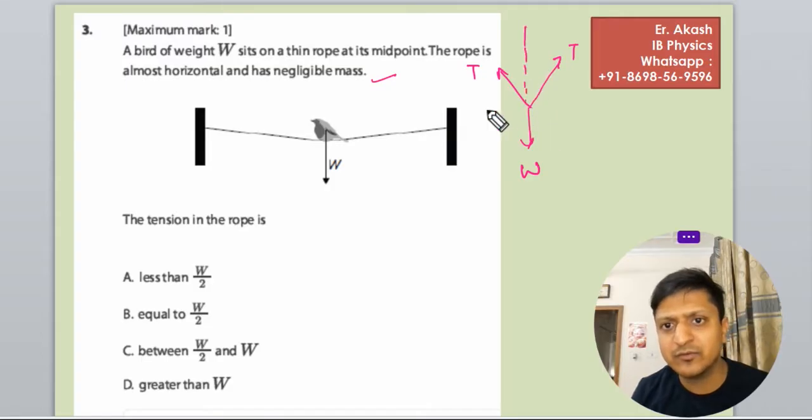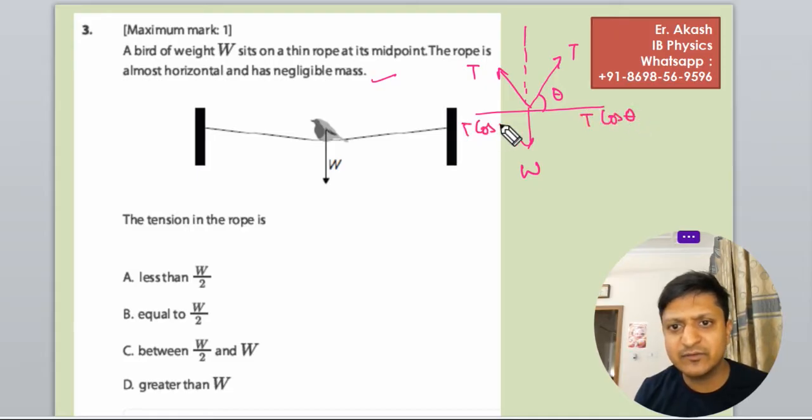Now we have to break into the components. Let's take this angle as theta. You can take this theta or this theta. According to the angle that you will take as theta, your calculation will go according to the angle. According to this, this will become T cos theta and this will also become T cos theta.